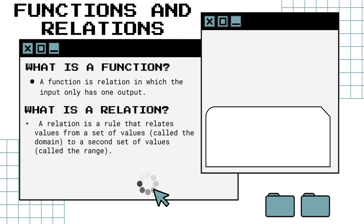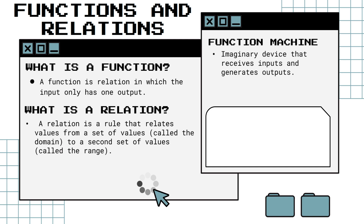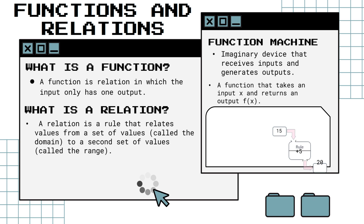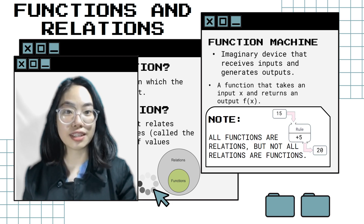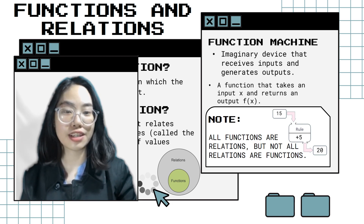To better understand the difference between a function and a relation, we have the so-called function machine. A function machine is an imaginary device that receives inputs and generates outputs. A function takes an input x and returns an output f(x). For example, our input is 15; the rule is adding 5, therefore the output is 20. Remember, all functions are relations, but not all relations are functions.